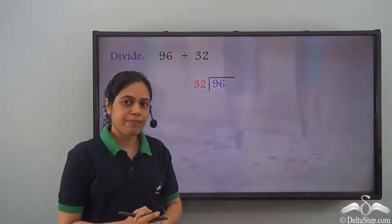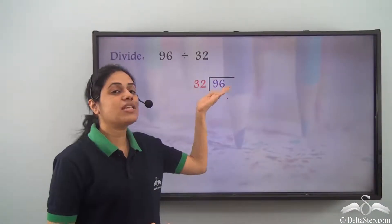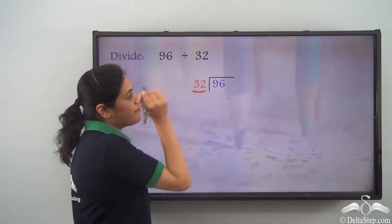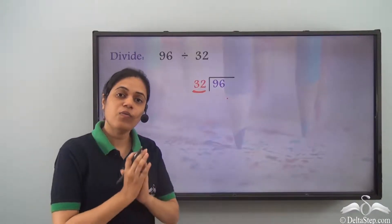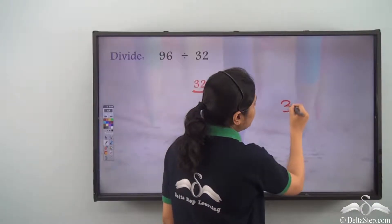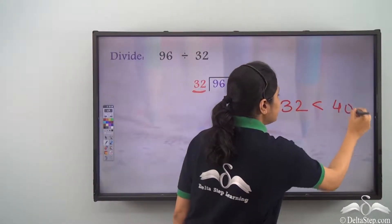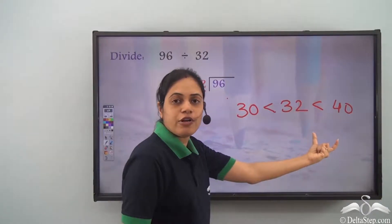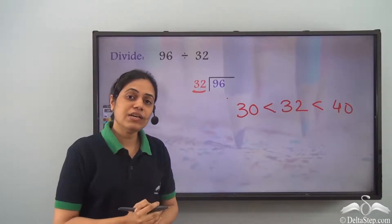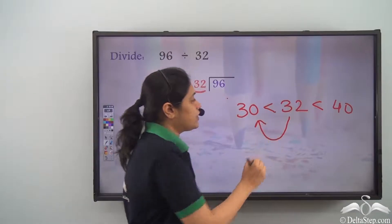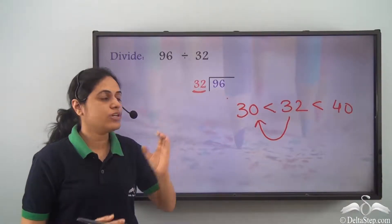32 is a two-digit number and I don't know the table of 32. So how do I find how many times 32 goes into 96? Whenever I have a two-digit number, I need to round it off to the nearest tens. 32 lies between 30 and 40, and since 32 is closer to 30, the nearest ten is 30.